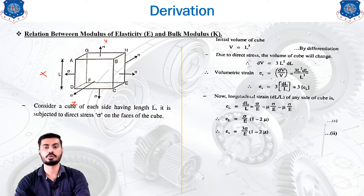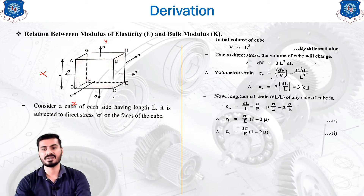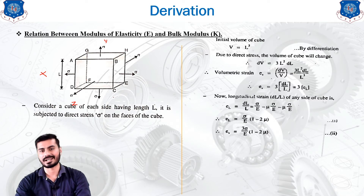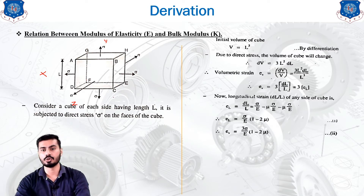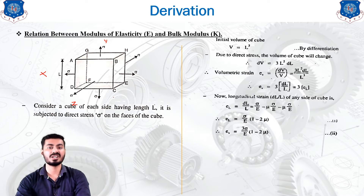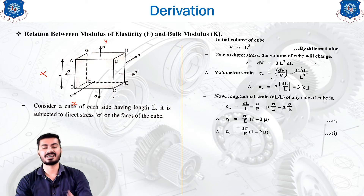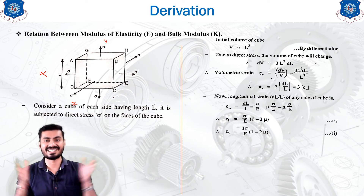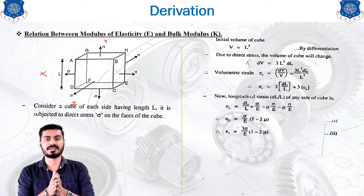Now dL over L is nothing but the linear strain, which can be written as epsilon_L. So epsilon_V equals 3 times epsilon_L — the volumetric strain is three times the linear strain. The longitudinal strain of any side of the cube is dL over L. Due to three mutually perpendicular stresses, one stress increases the longitudinal dimension (positive sign) while the other two perpendicular stresses decrease it (negative sign).